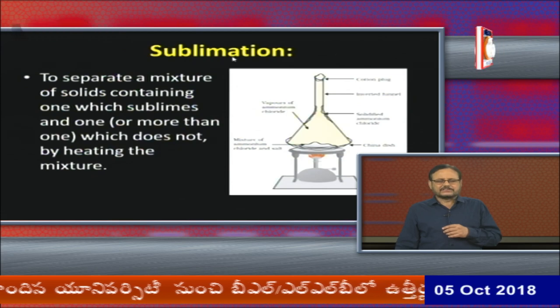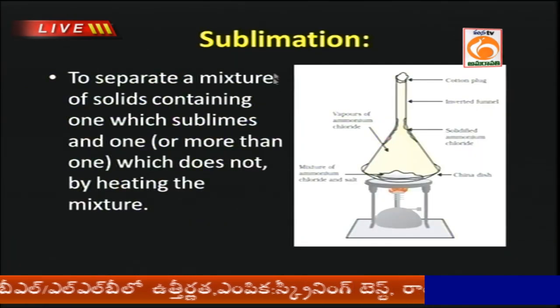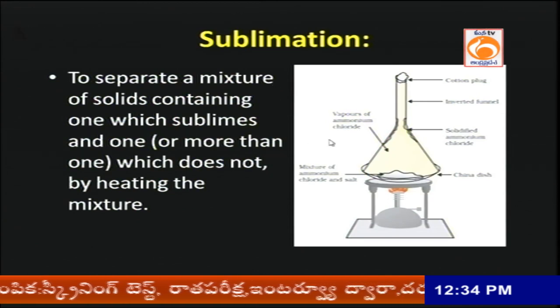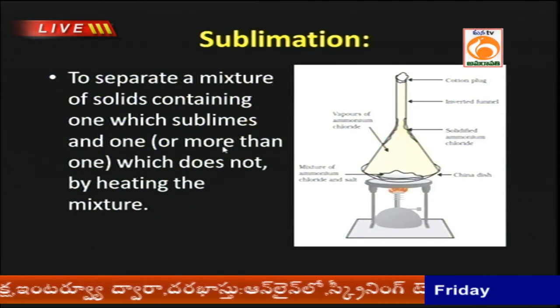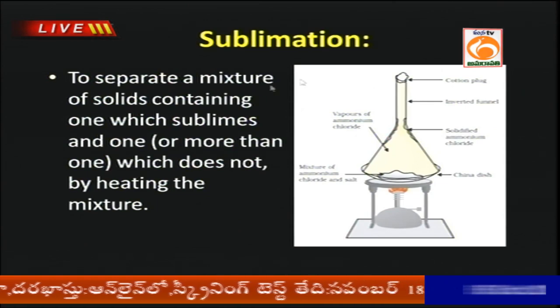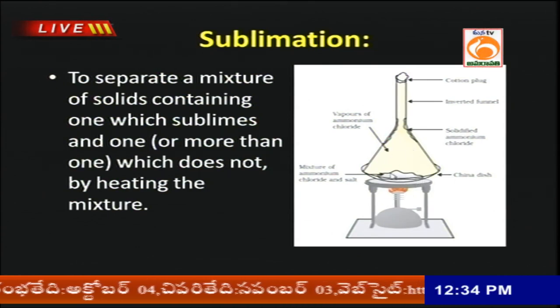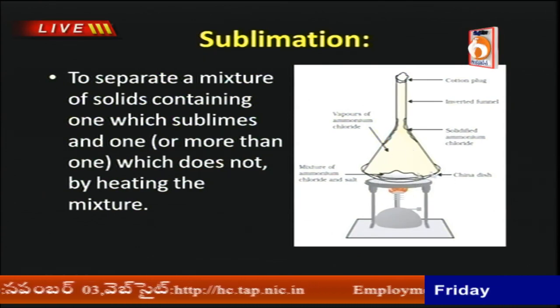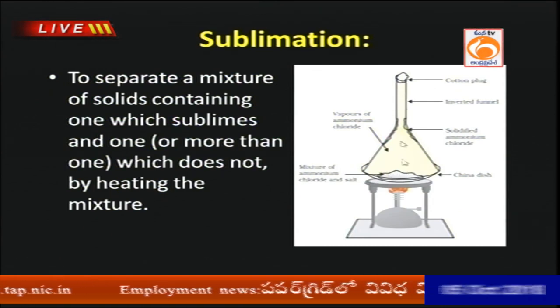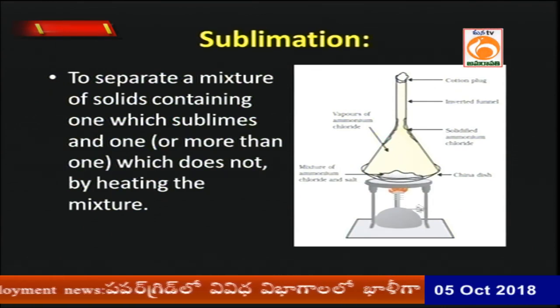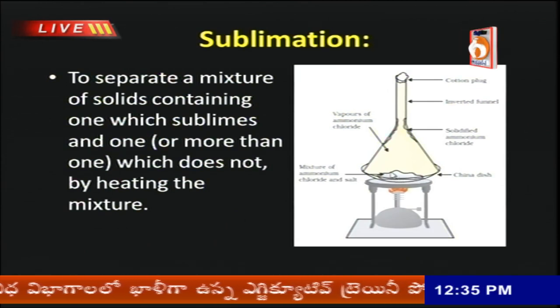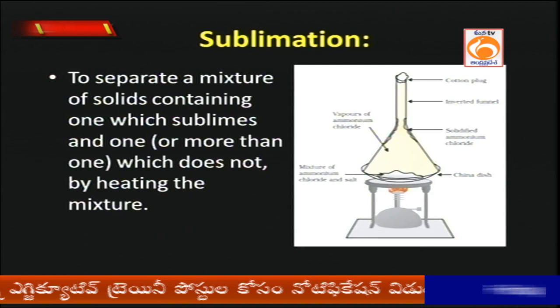Sublimation is used for substances that have the property of sublimating, such as camphor, ammonia, and iodine. These can be purified by placing the substance in a glass dish, putting a funnel on top, and heating it. Sublimation is a physical property where a solid goes directly into the vapor state without passing through the liquid state.